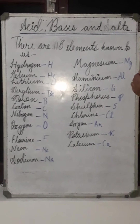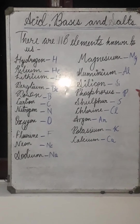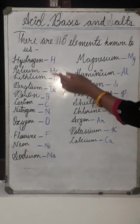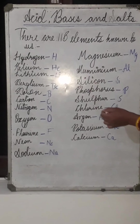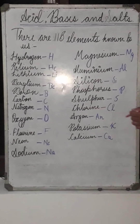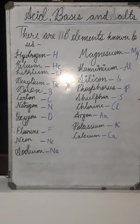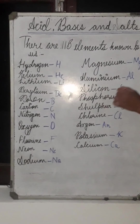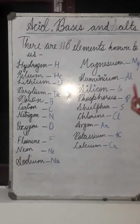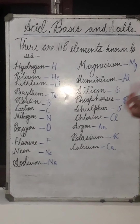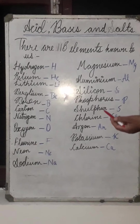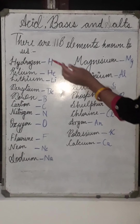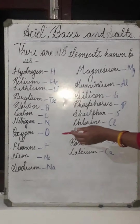But before starting this chapter, I would like to introduce the first 20 elements of the periodic table to you, because these terms are commonly used in next chapters and next classes. So you all should know about these 20 elements.